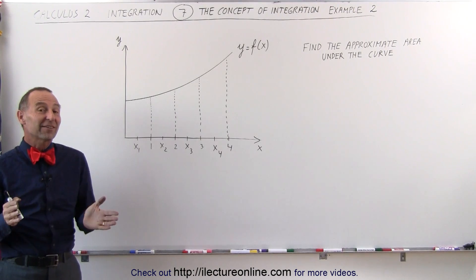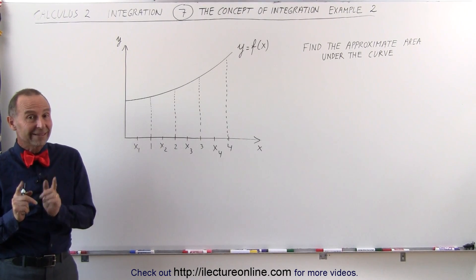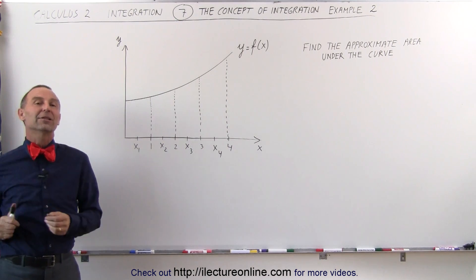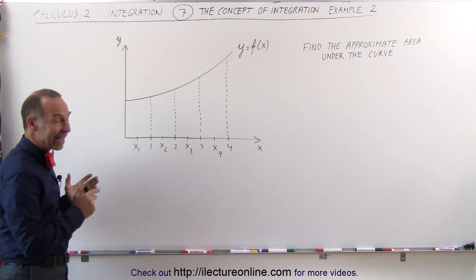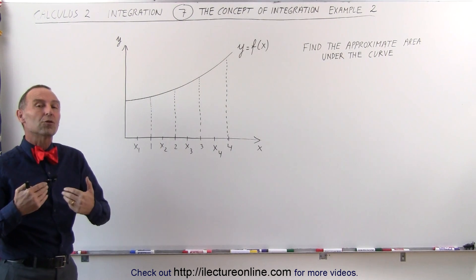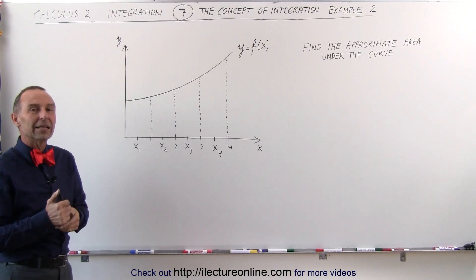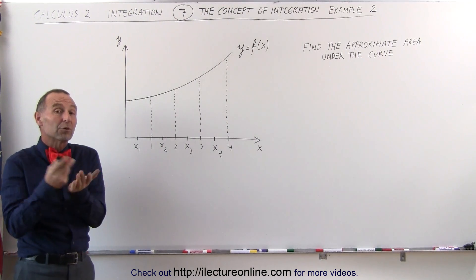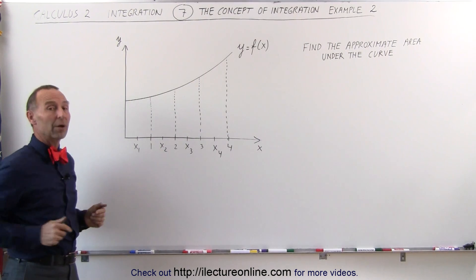Welcome to ElectronLine, and here's our next example of how to find, or at least approximate, the area underneath the curve. We know that we can find the exact area by finding the integral, but this approximation shows you how the integral is conceived. Initially, the concept of the integral was really conceived by this particular process.